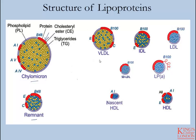VLDL is a similar particle; however, this particle is produced in the liver and its primary apolipoprotein is B100. It also contains ApoE and ApoC, and it progresses from a triglyceride-rich VLDL through to IDL and then ends its life as an LDL particle. You can see the progression and the loss of ApoC from VLDL to IDL, and then from IDL to LDL is the loss of ApoE.